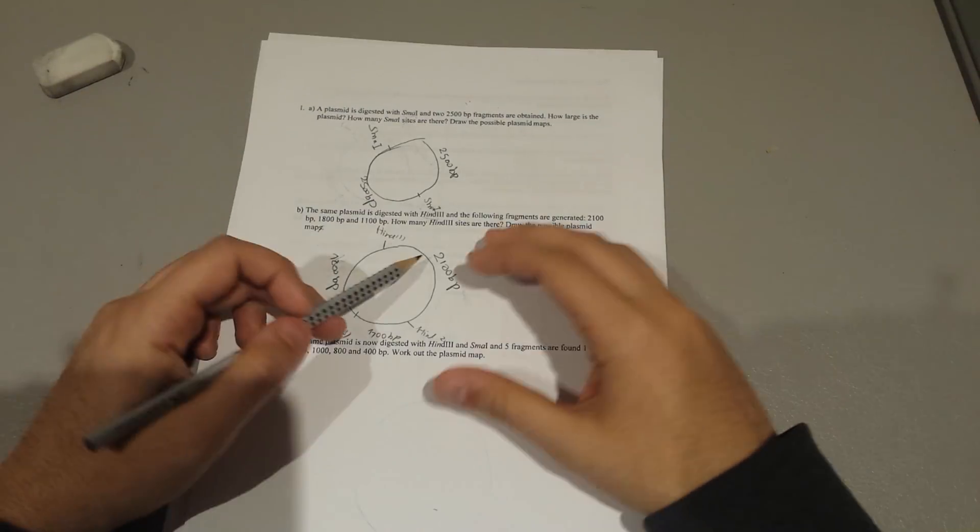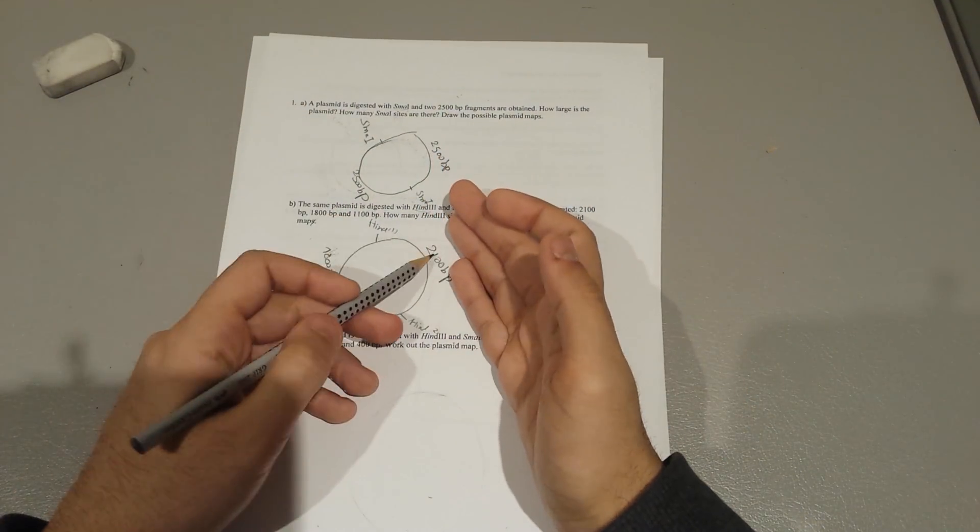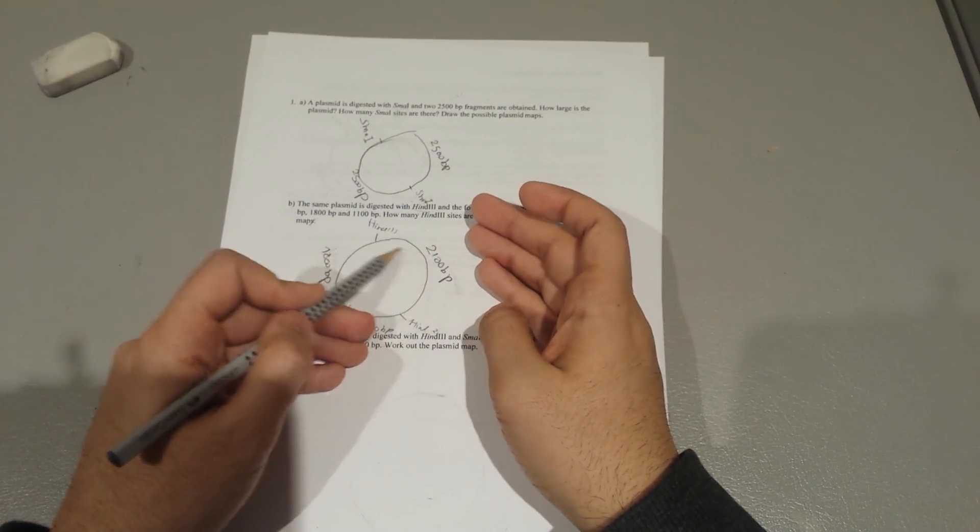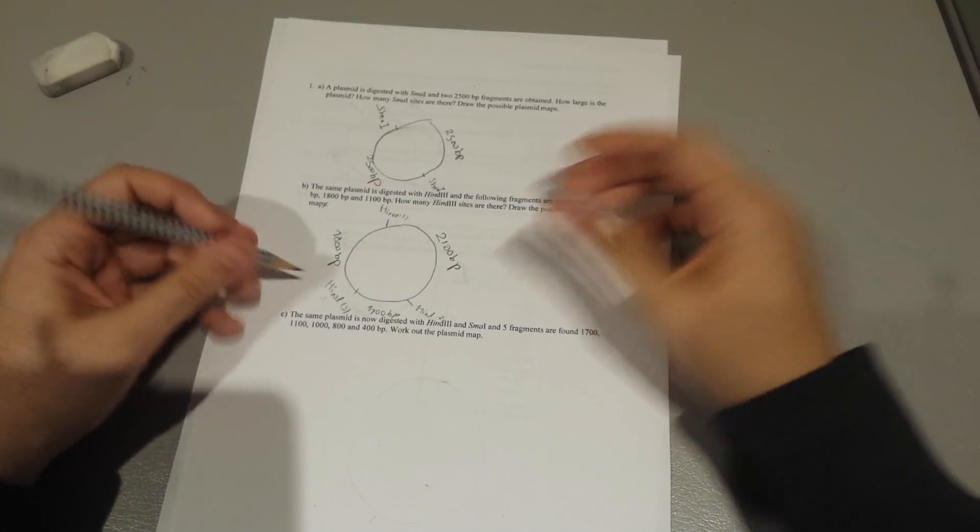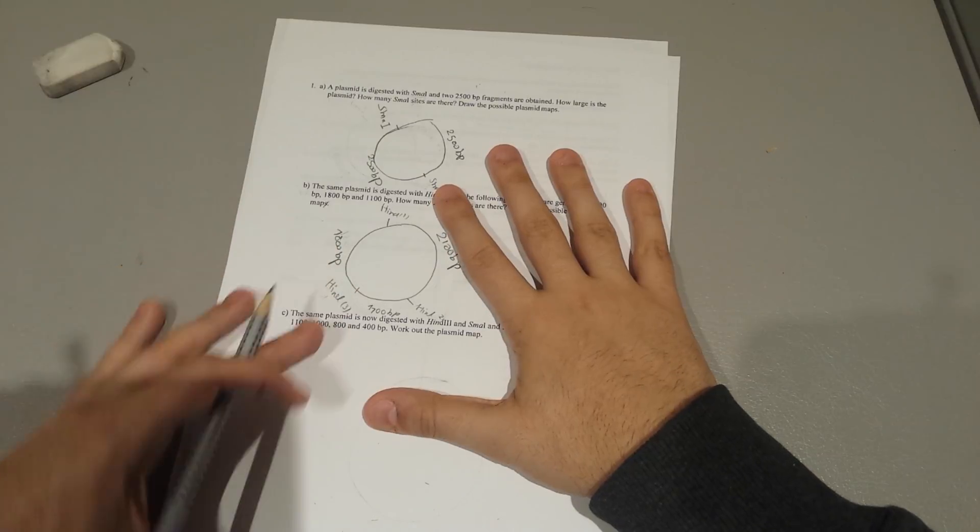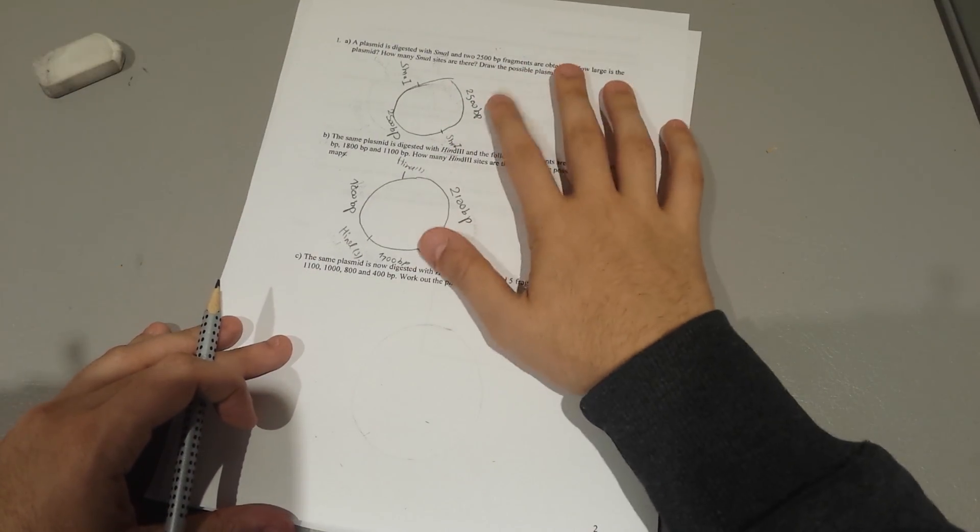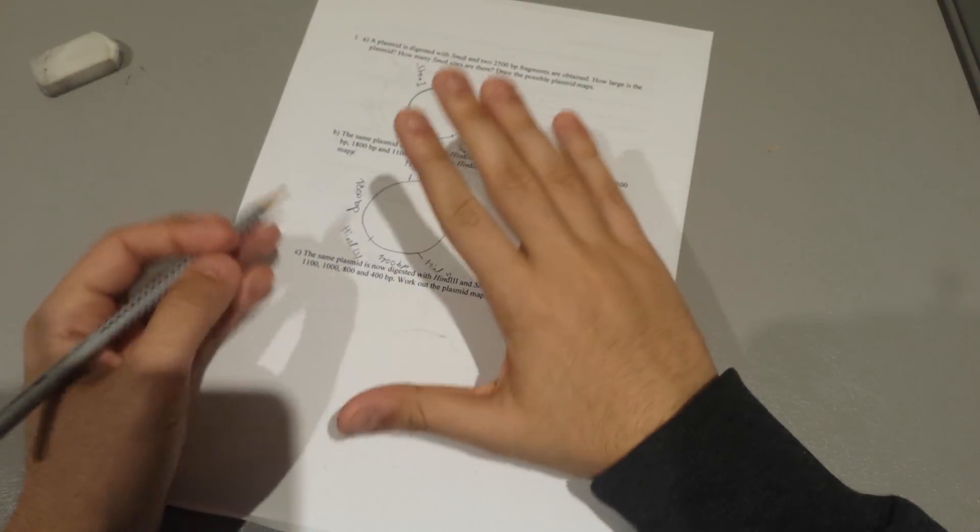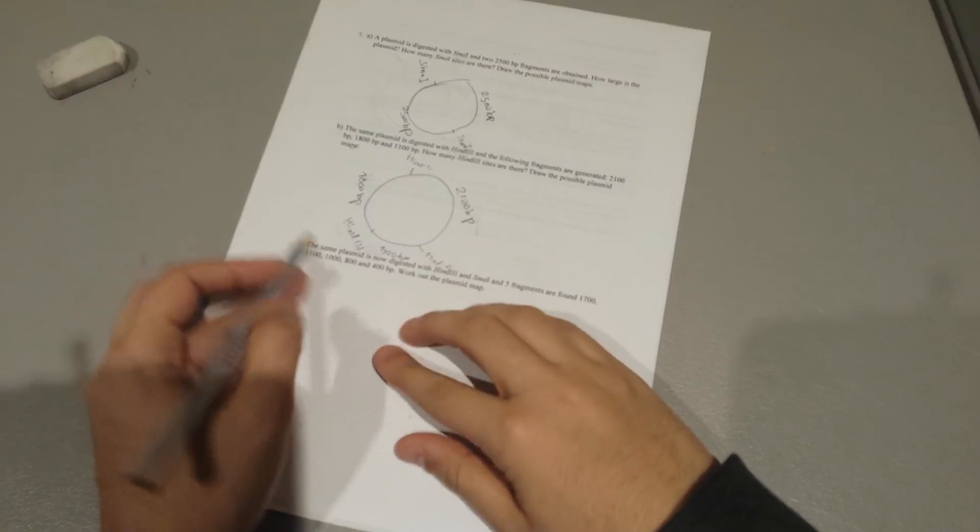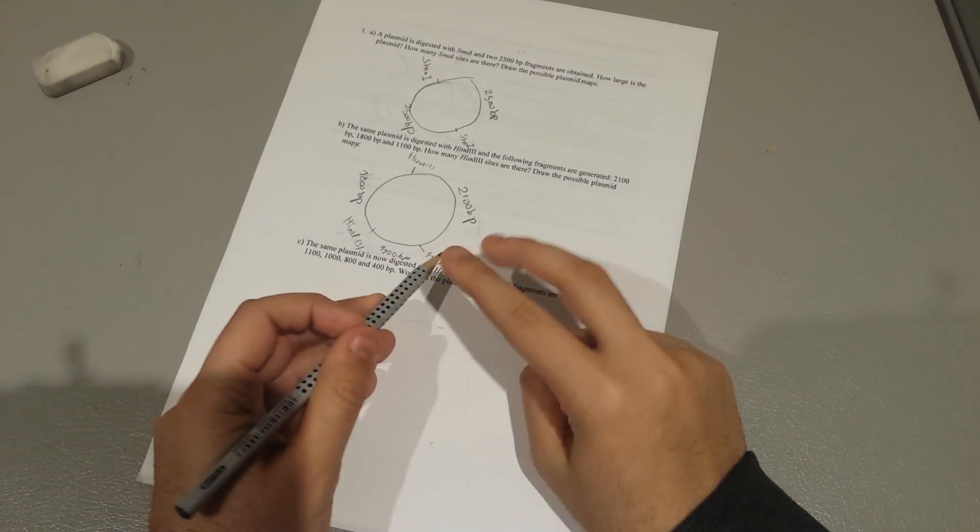But for this one it's similar, isn't it? So what I mean by that is in this one I'm just going to go through one map, but if in the example you're told to show two maps, what you're going to do is just take the similar pathway but instead of writing 2100 here, write it there and make a change. So this is a single digest, meaning we just expose it to one restriction endonuclease at one time.